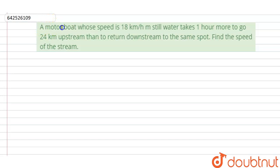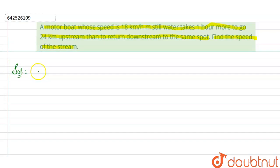The question says that a motorboat whose speed is 18 kilometers per hour in still water takes one hour more to go 24 kilometers upstream than to return downstream to the same spot. We have to find the speed of the stream. First, we'll write down the given information: speed of boat in still water is 18 kilometers per hour.